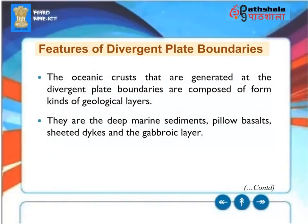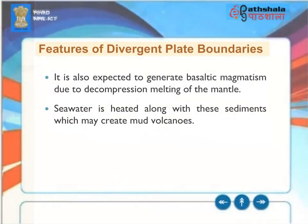The oceanic crusts generated at divergent plate boundaries are composed of four kinds of geological layers: deep marine sediments, pillow basalts, sheeted dikes, and the gabbroic layer. It is also expected to generate basaltic magmatism due to decompression melting of the mantle. Seawater heated along with these sediments may create mud volcanoes.